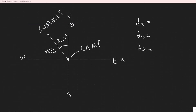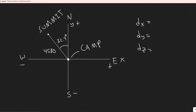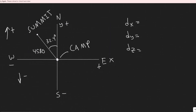We're going to label x, y, and z as negative or positive. If it's north, it's positive; if it's south, it's negative. If it's east, it's positive; if it's west, it's negative. And then upwards is positive, downwards is negative. Just keep that in mind.